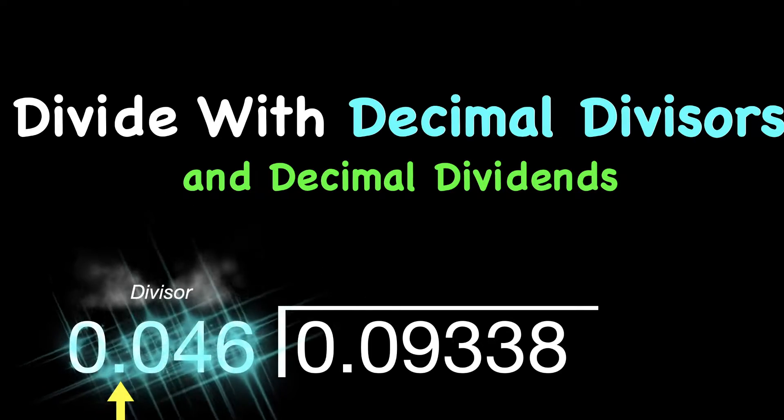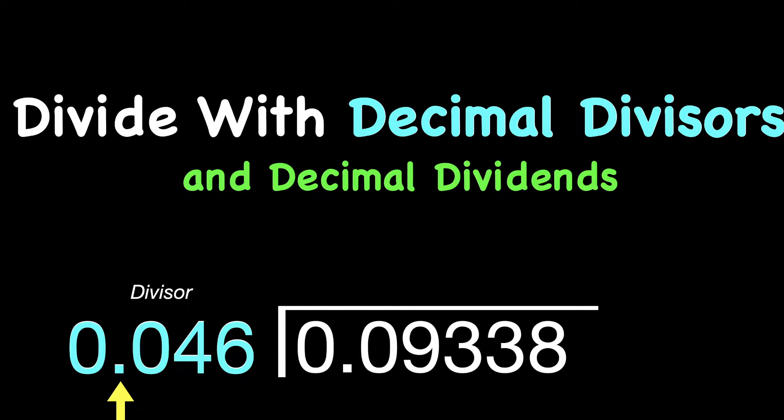Decimal divisors just means that the number we're dividing by has a decimal point, and the dividends also have a decimal point.